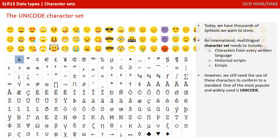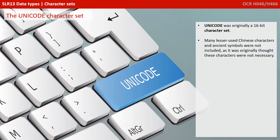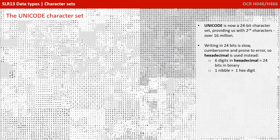Unicode is implemented in slightly different ways for different purposes. For example, web pages may use a variant known as UTF-8, where the first 8 bits are the same as ASCII and the other characters are encoded with 32 bits. Unicode was originally a 16-bit character set, but many lesser-used Chinese characters and ancient symbols were not included, as it was originally thought these wouldn't be necessary. Unicode is now a 24-bit character set, and therefore those numbers are expressed in 6-digit hexadecimal, to make it easier to refer to a particular character and their code.